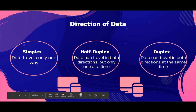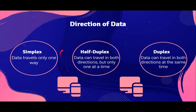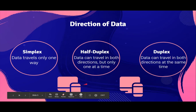So when the first person is speaking, the second person cannot speak. And after they have finished speaking, the second person can start speaking. When representing half duplex in diagram form, you have to draw one arrow from the first device to the second device, and another arrow from the second device to the first device.